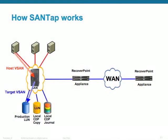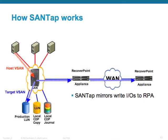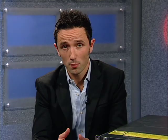For RecoverPoint to work, the RecoverPoint appliance needs to receive a copy of all the write IOs going from the host to the storage. There is a service inside the fabric that performs this IO splitting — exactly called Cisco SanTap. Cisco SanTap takes each write IO, sends a copy to the backend storage and another copy to the appliance. The appliance can then use it locally or transport it over the WAN to the remote site.